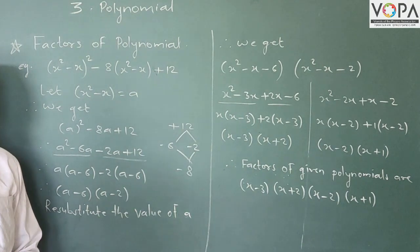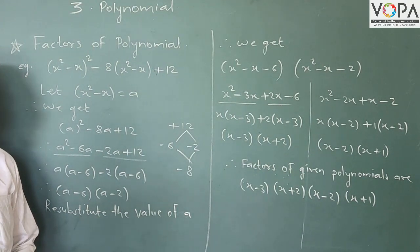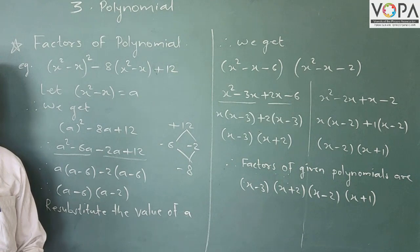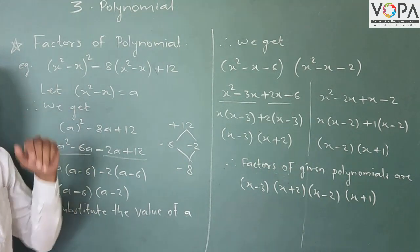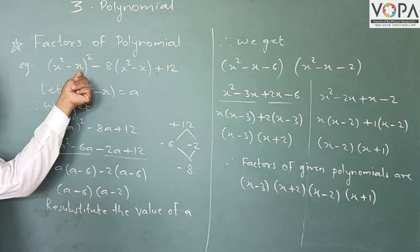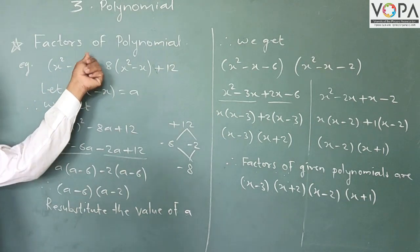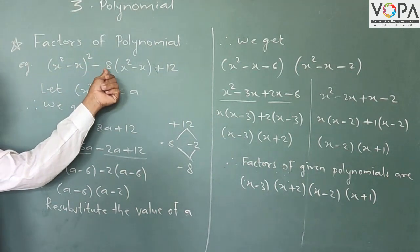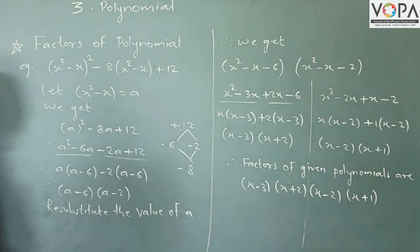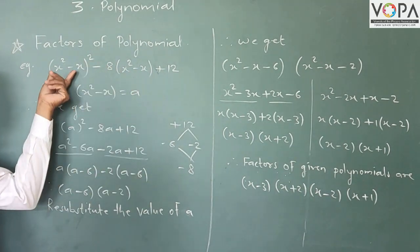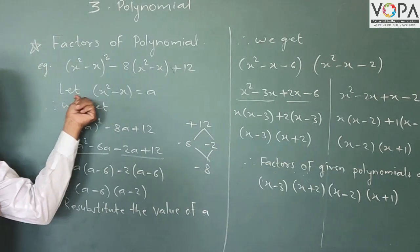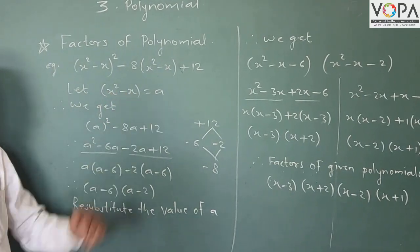Dear students, today we are also taking how to find factors of a polynomial by factorization. We are seeing one example: (x² − x)² − 8(x² − x) + 12. Here, since both brackets contain x² − x, let a equal to x² − x.